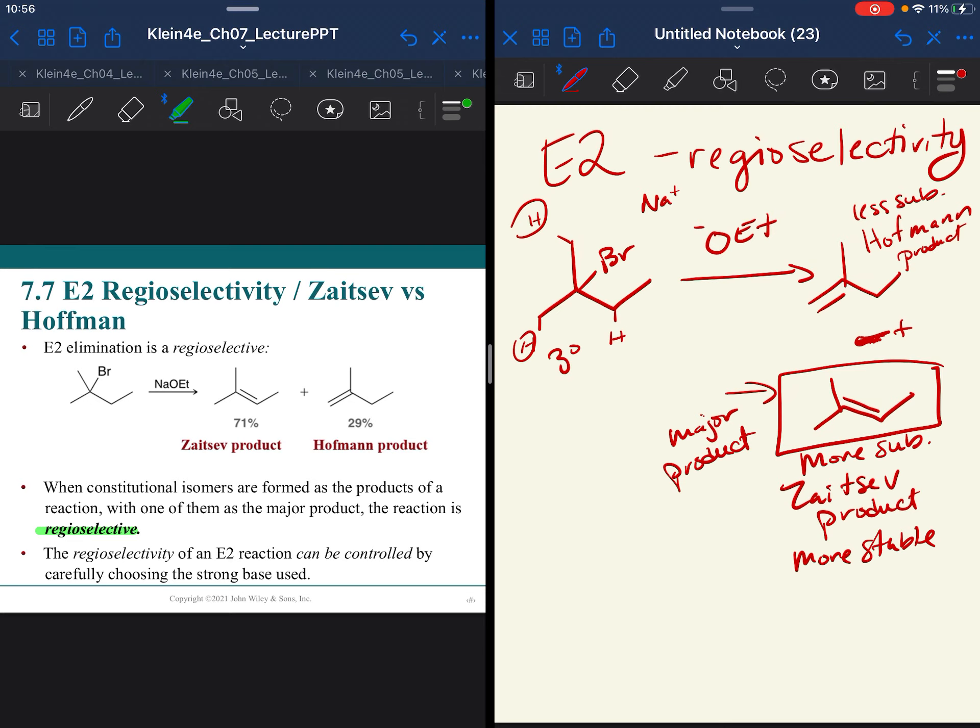We call this regioselective because it makes both regioisomers. These are constitutional isomers. The regiochemistry is different. The actual region of the molecule where the double bond exists is different. It is going to make both, but it is selective for the Zaitsev product.